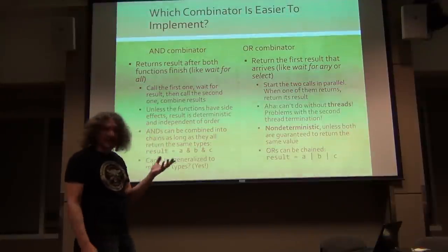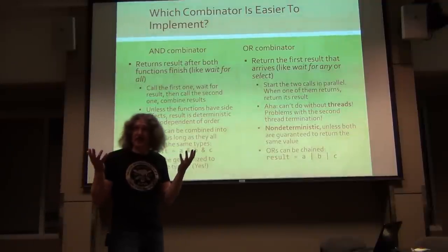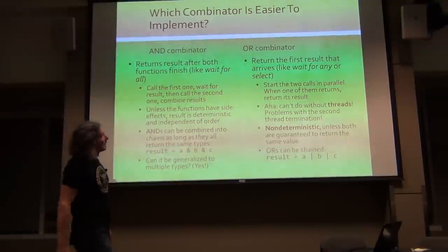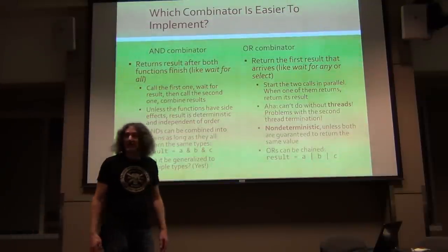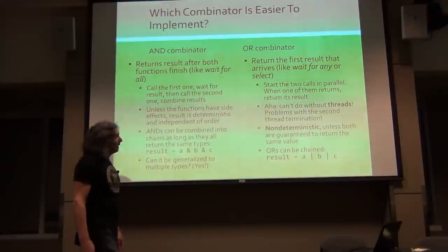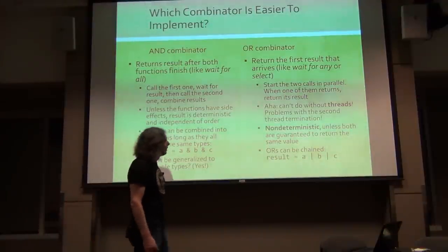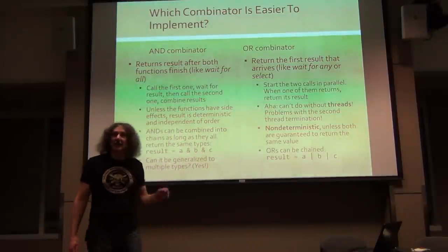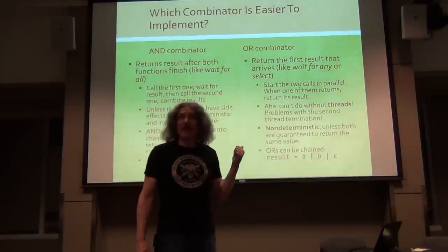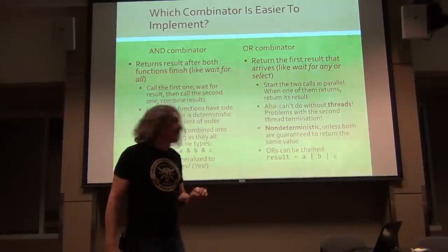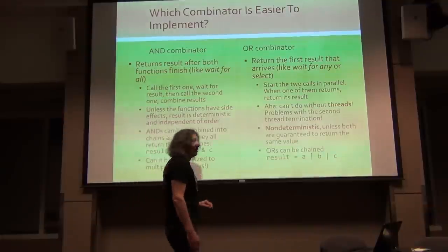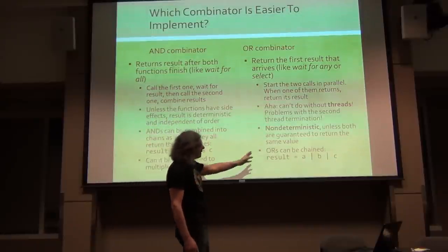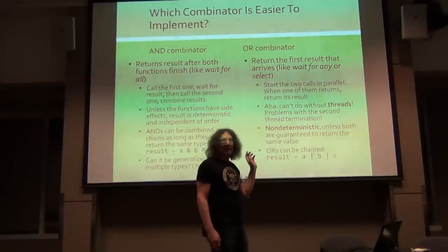Now the OR combinator, very similar sort of, you might think. I mean, so it's AND and OR, what's the difference? Well OR returns the first result that arrives. Sort of like wait for any or selecting units. How it's implemented? You have to start two calls in parallel. And here's the word parallel. When one of them returns, return its result. And abandon the second. That's the implementation of this. And you can't do it without threads. Aha. So that's already a completely different level of equality here. Here you didn't need threads.